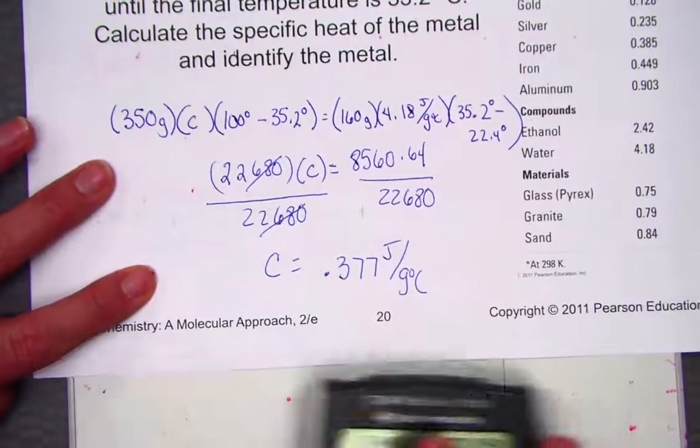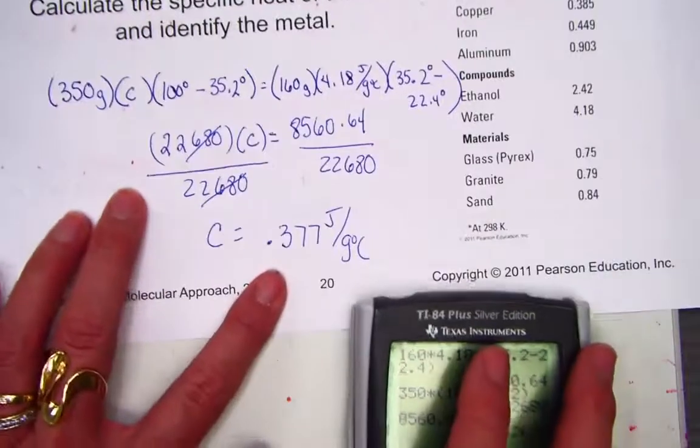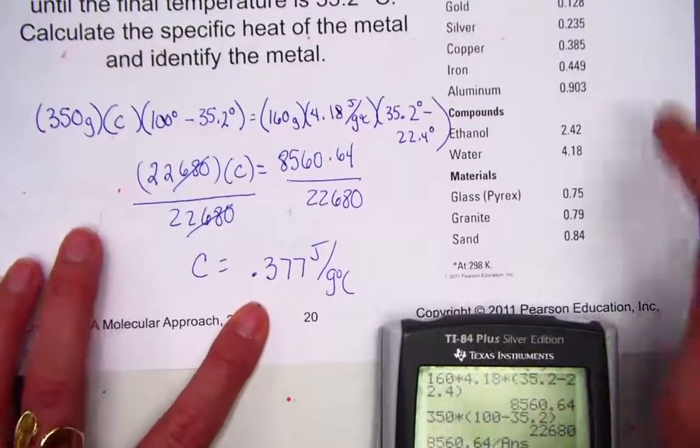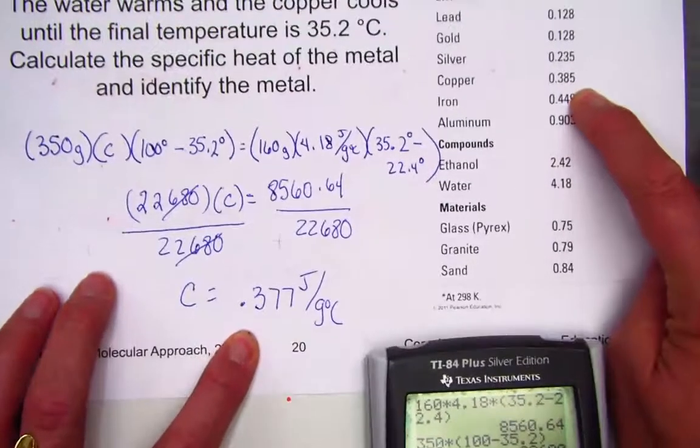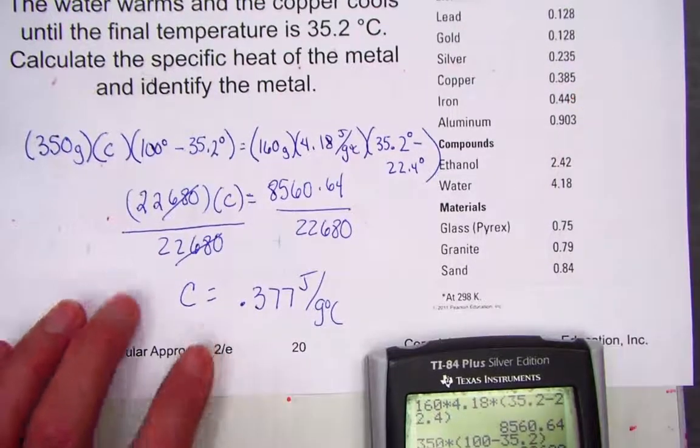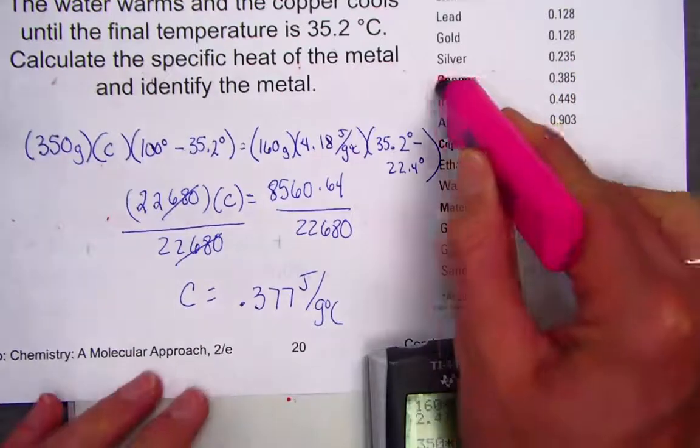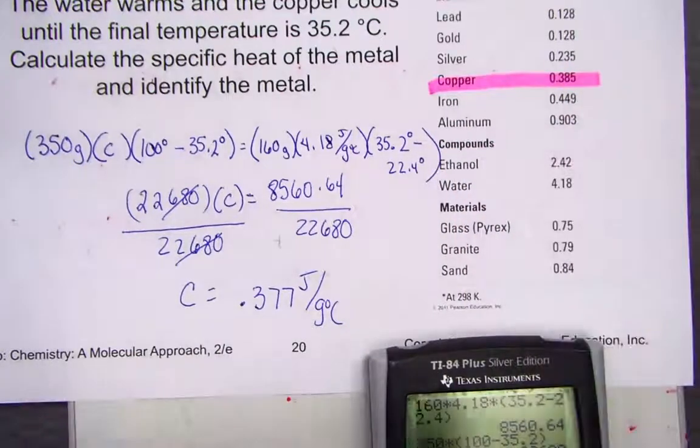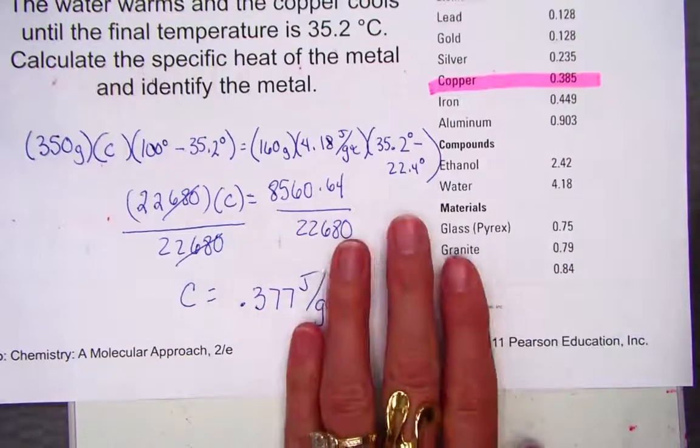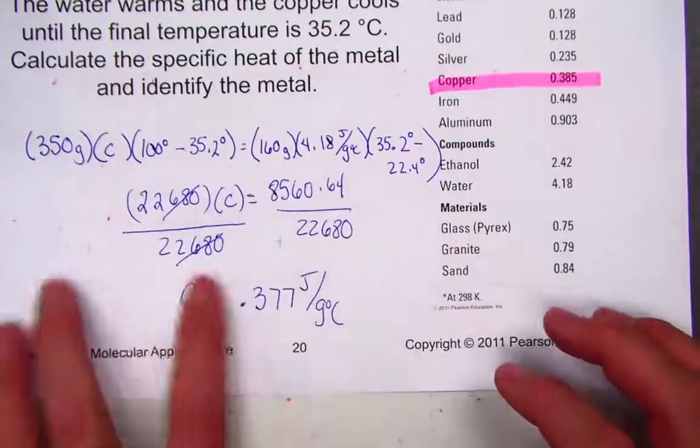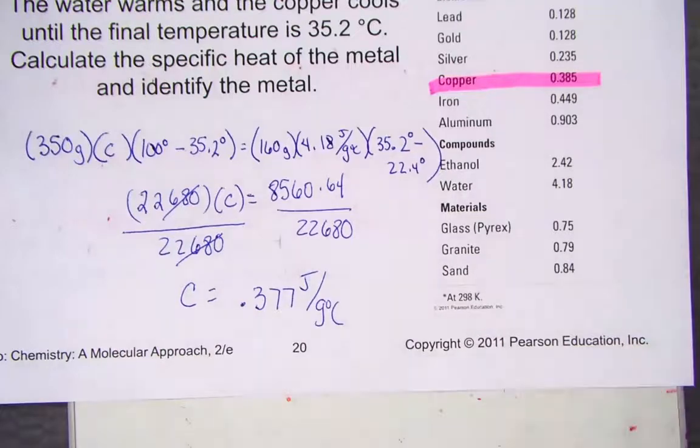If I examine the table, 0.377 indeed matches the closest value, 0.38 for copper. I would identify this unknown element as copper. Strategy here: simplified MC delta T for water, pulled out to solve for the specific heat constant of the unknown, and then used the chart to identify copper as our element.